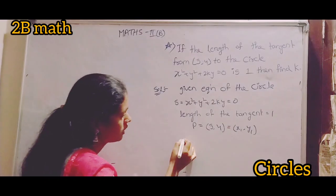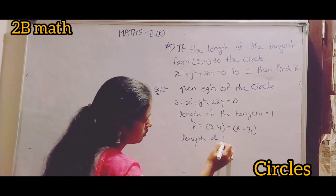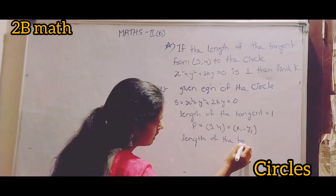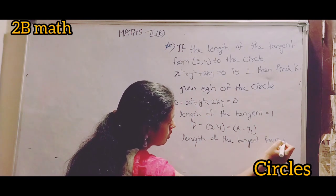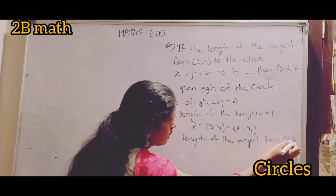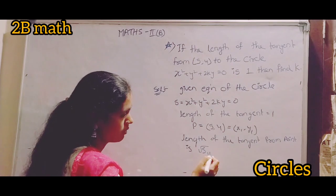Length of the tangent from point P is root s double 1.